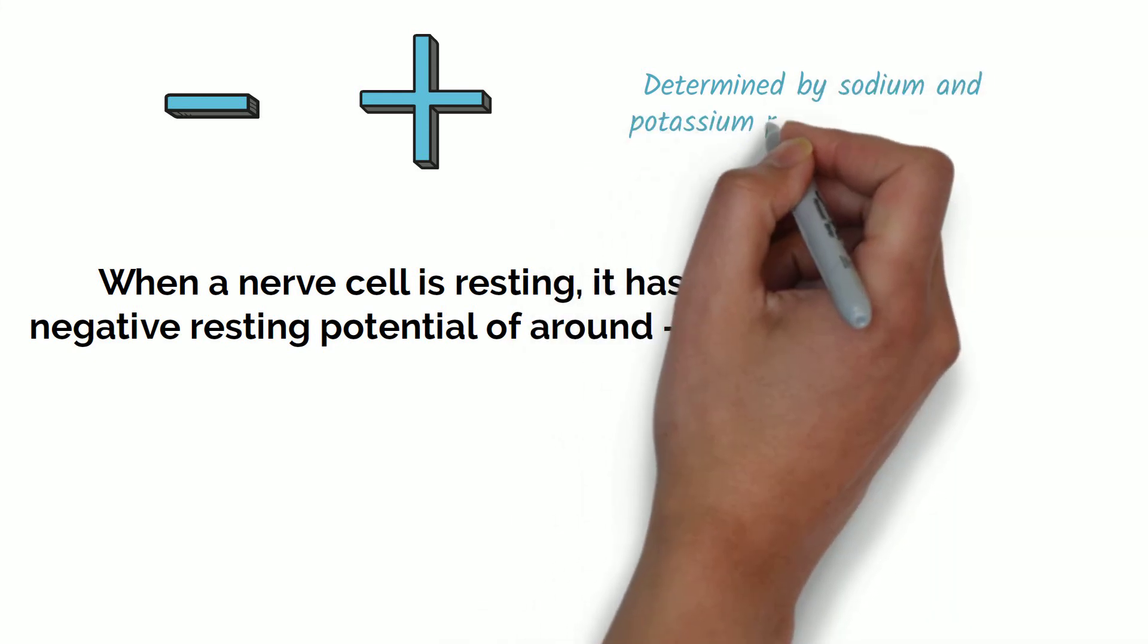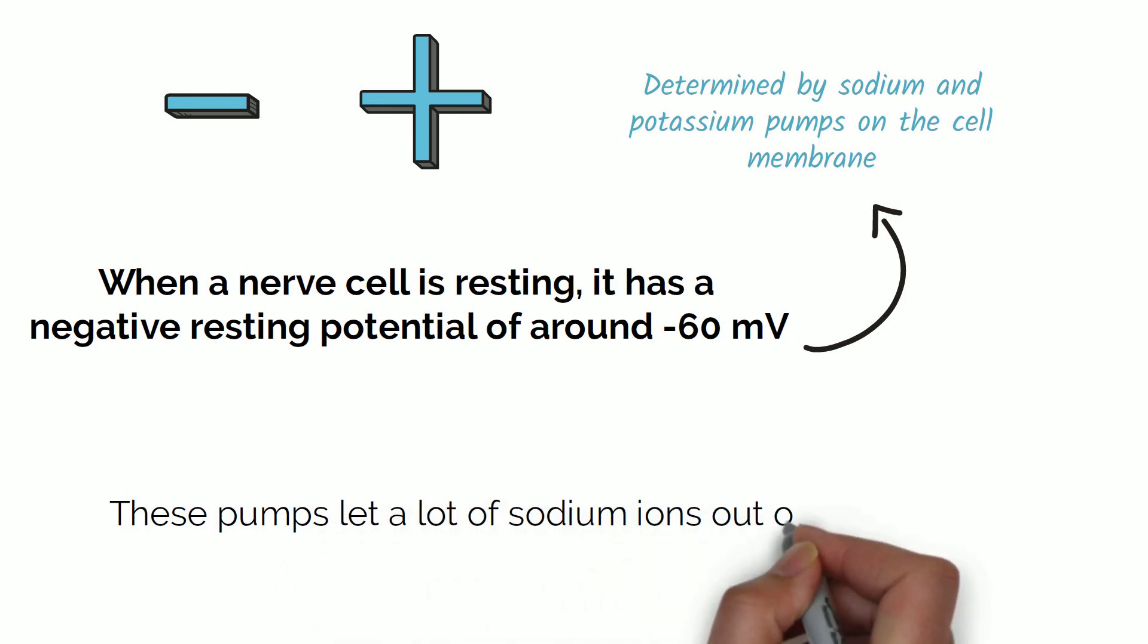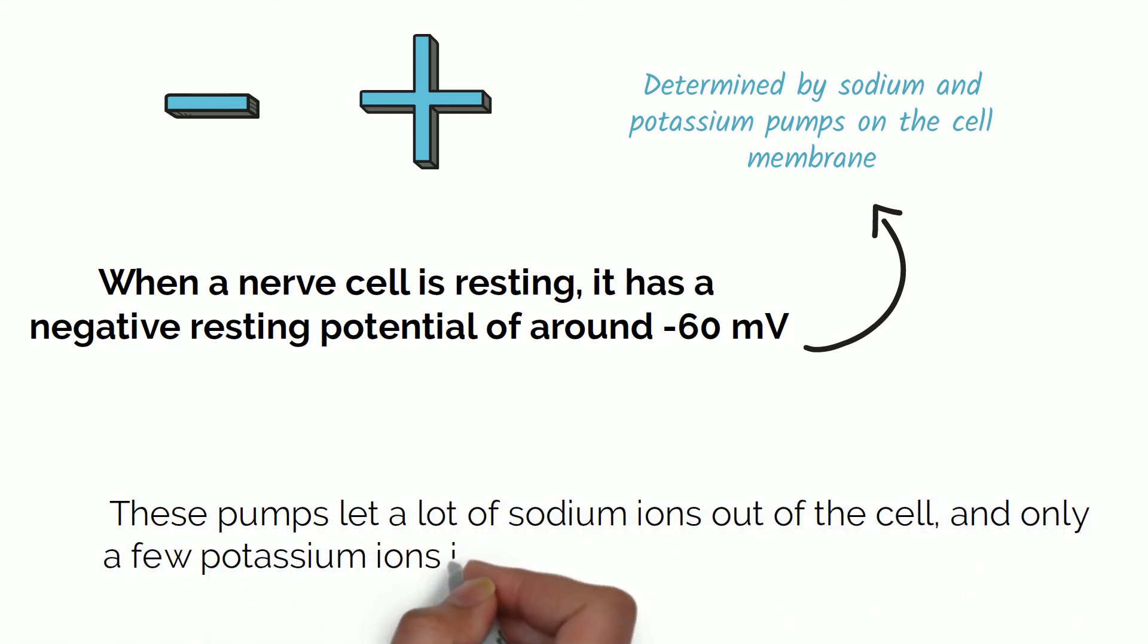This potential is determined by special pumps on the cell membrane responsible for the transport of sodium and potassium ions. These pumps let a lot of sodium ions out of the cell and only a few potassium ions in, which then creates this negative charge inside the cell.